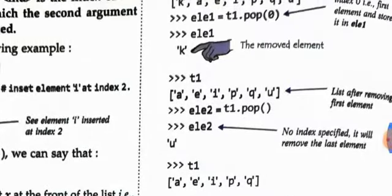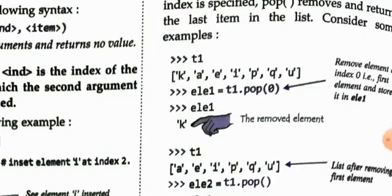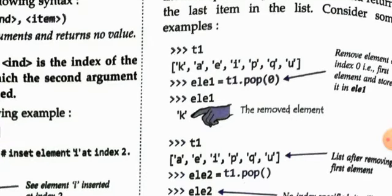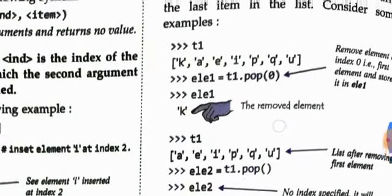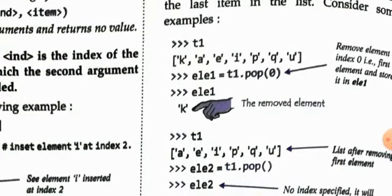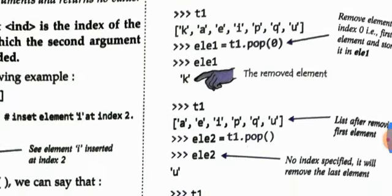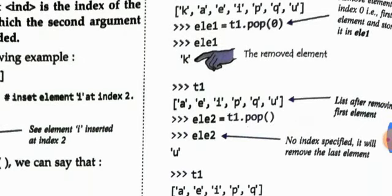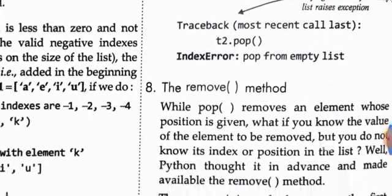Now let's look at the pop() and remove() methods. With the list t1 = ['k', 'a', 'e', 'i', 'p', 'q', 'u'], writing el1 = t1.pop(0) pops the element at index 0, which is 'k'. If you print el1, you see the removed element 'k'. If you print t1 afterwards, the list no longer contains 'k' — it shows ['a', 'e', 'i', 'p', 'q', 'u'].